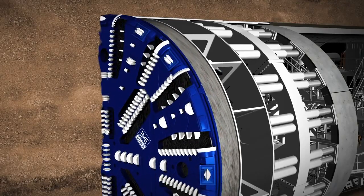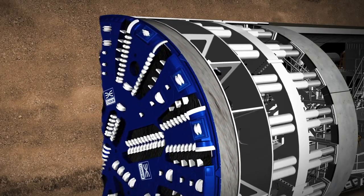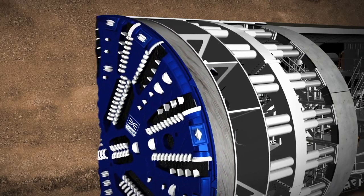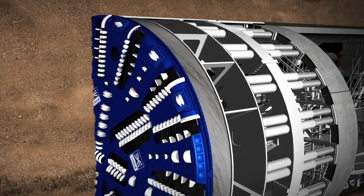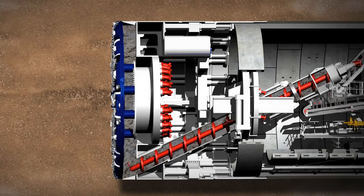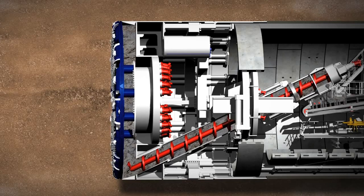The first part of the TBM's work is the tunnelling phase. The Earth Pressure Balance TBM has a cutting wheel which is pressed against the tunnel face by hydraulic cylinders. Inside the cutting wheel, the disc cutters and scraping tool loosen the material.